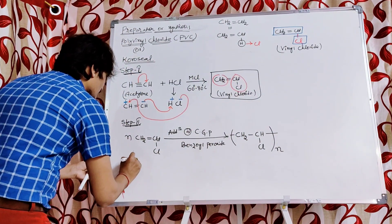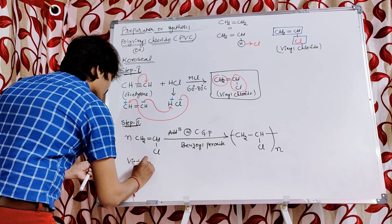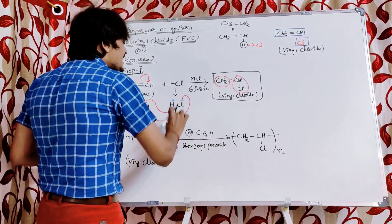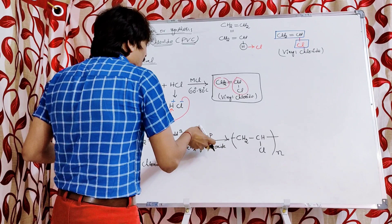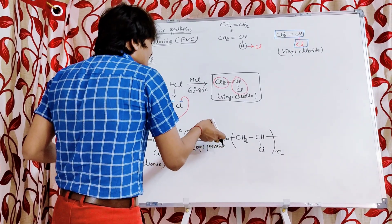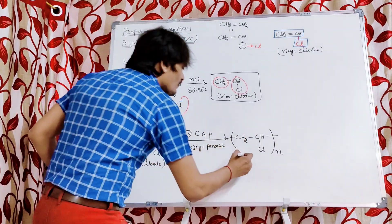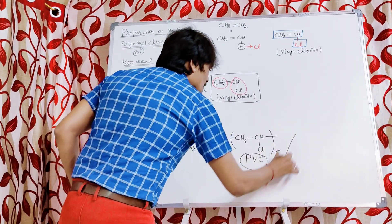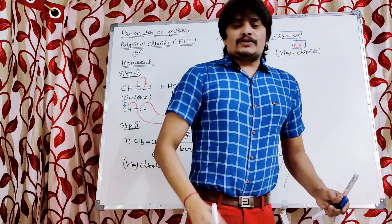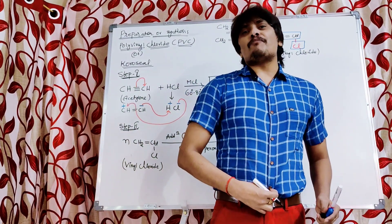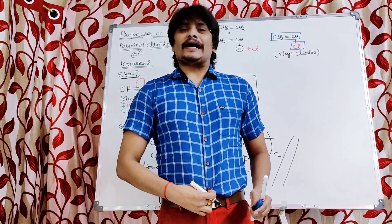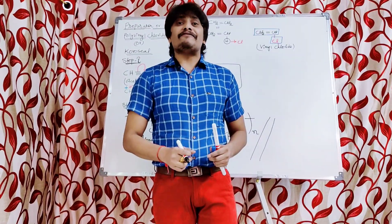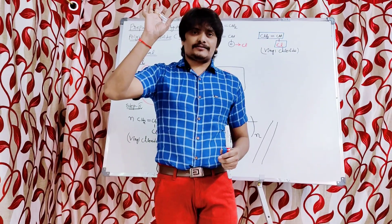Since vinyl chloride is a single unsaturated monomer unit, it undergoes addition or chain growth polymerization in the presence of benzoyl peroxide as the chain initiator, resulting in the formation of polyvinyl chloride, popularly known as PVC. I hope you understood this preparation or synthesis of the most popular polymer, polyvinyl chloride. Thank you so much.